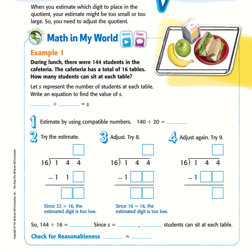During lunch, there were 144 students in the cafeteria. The cafeteria had a total of 16 tables. How many students can sit at each table? So we have 144, we're going to divide that among 16 tables.